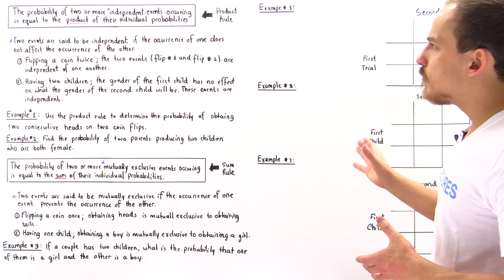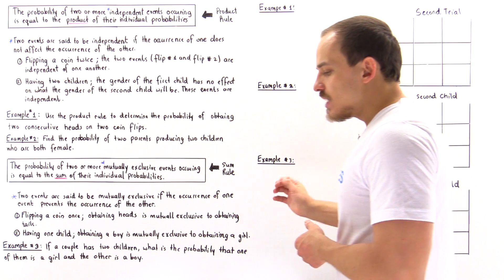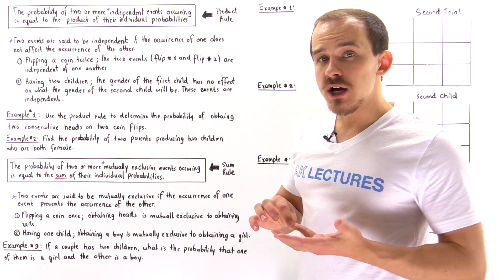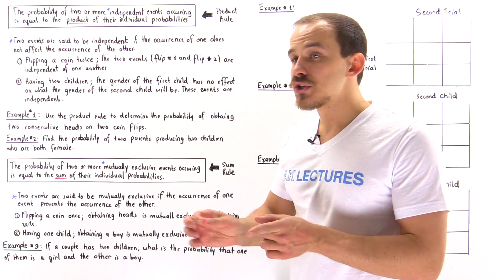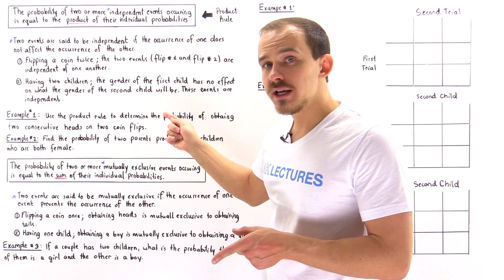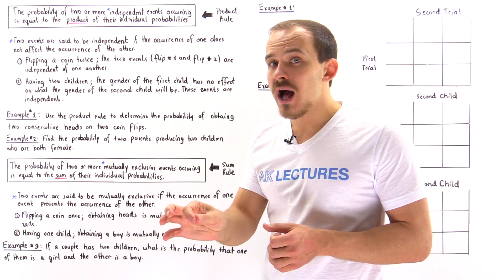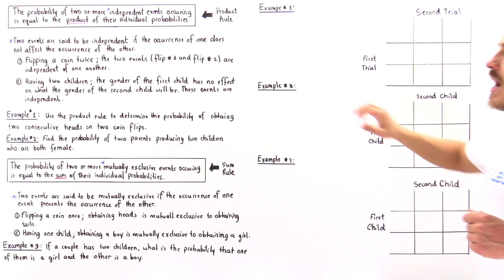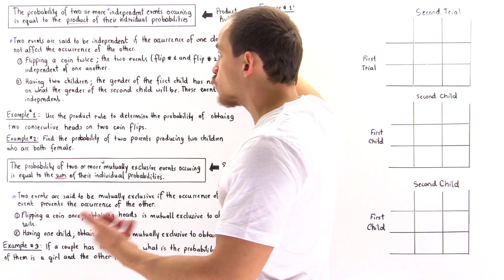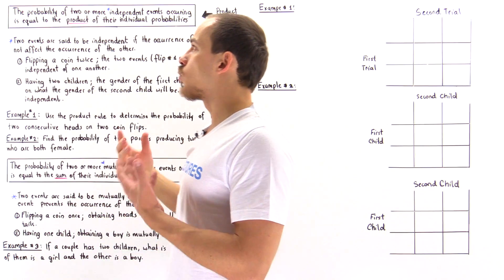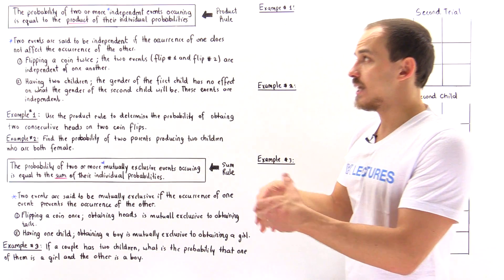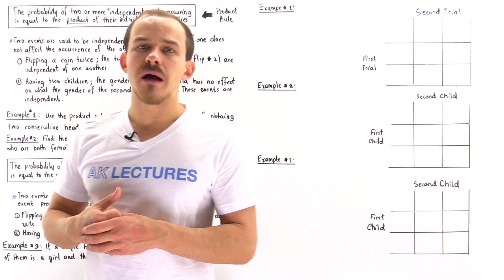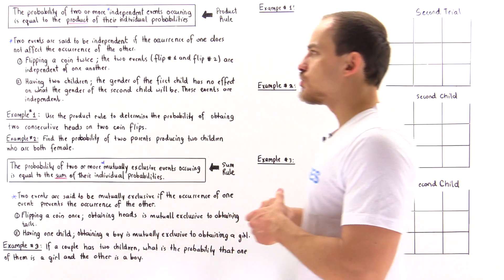Let's begin by defining what the product rule is. The product rule states that the probability of two or more independent events taking place or occurring is equal to the product of their individual probabilities — that's exactly why we call it the product rule. To use it, we have to multiply the individual probabilities, as we'll see in just a moment.